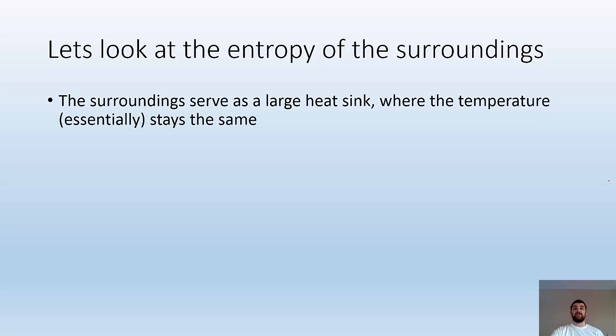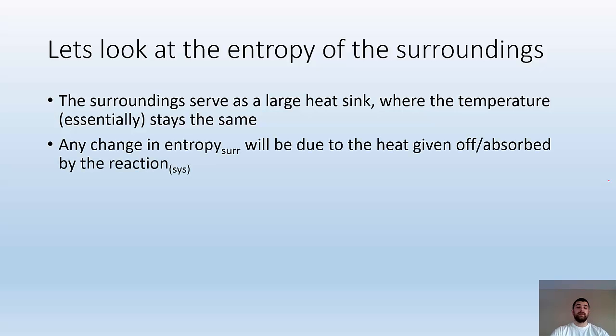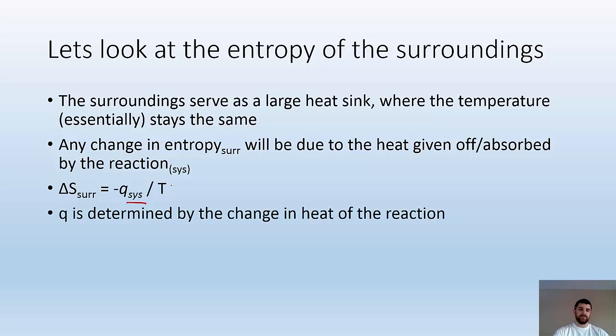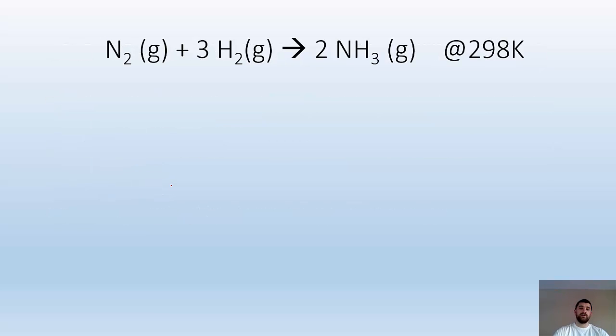The surroundings serve as a large heat sink where temperature stays essentially constant. Any change in entropy of the surroundings is due to heat given off or absorbed by the reaction. ΔSsurroundings = -Qsystem/T. Q is determined by the change in enthalpy, which we calculate using ΔHf values.